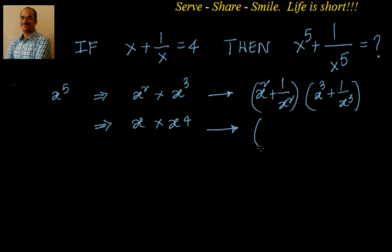Similarly, the other way is x plus 1 by x and multiply that with x power 4 plus 1 by x power 4. You can pick any one of the options. I will take the first option.